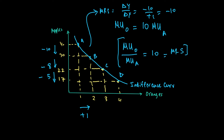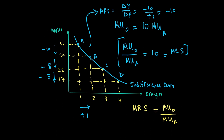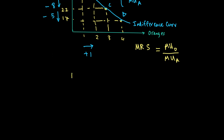In other words, we have found a general form for the marginal rate of substitution in terms of utility: MU of oranges over MU of apples. Since oranges are on the x-axis and apples are on the y-axis, we can write this in general form: the marginal rate of substitution, or the slope of the indifference curve, is simply MU of X over MU of Y.